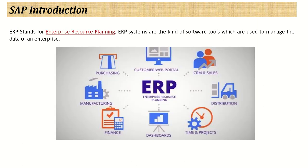ERP systems are software tools which are used to manage and plan the data of the organization. In any company, there are different departments like purchasing, finance, sales, CRM, etc. In big companies, we require tight integration between all the departments. So the software developed to manage all the operations of a company, including all departments and all resources, is called ERP software.